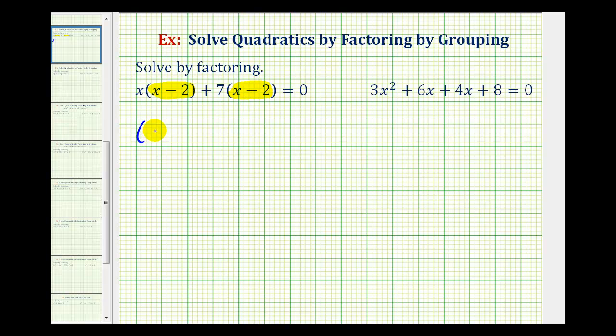So if we factor out the quantity x minus 2, notice how we'd be left with the quantity x plus 7. And this product is equal to 0.